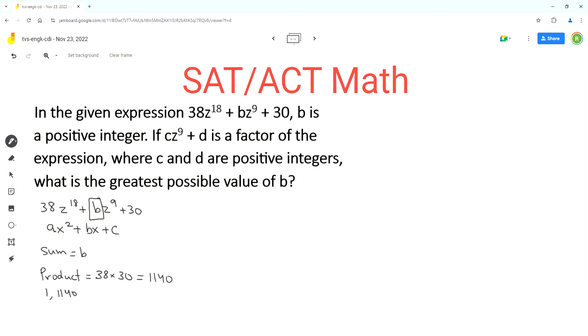The first pair of numbers that come to my mind that multiply to 1140 are 1 and 1140. The second pair of numbers that multiply to 1140 are 2 and 570.